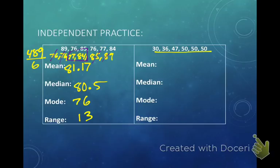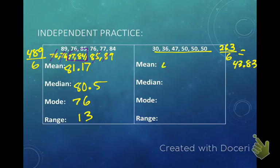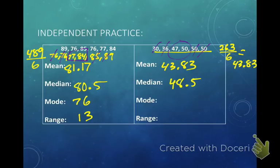The next set is already in order from least to greatest. Add them up and you get 263. There were six of them, so you divide by 6 and get a mean of 43.83. For the median, crossing off gives two in the middle: 50 and 47. Add them to get 97, divide by 2 — you get 48.5. The mode is 50, it's the most obvious one. And the range is 50 minus 30, which gives us 20.